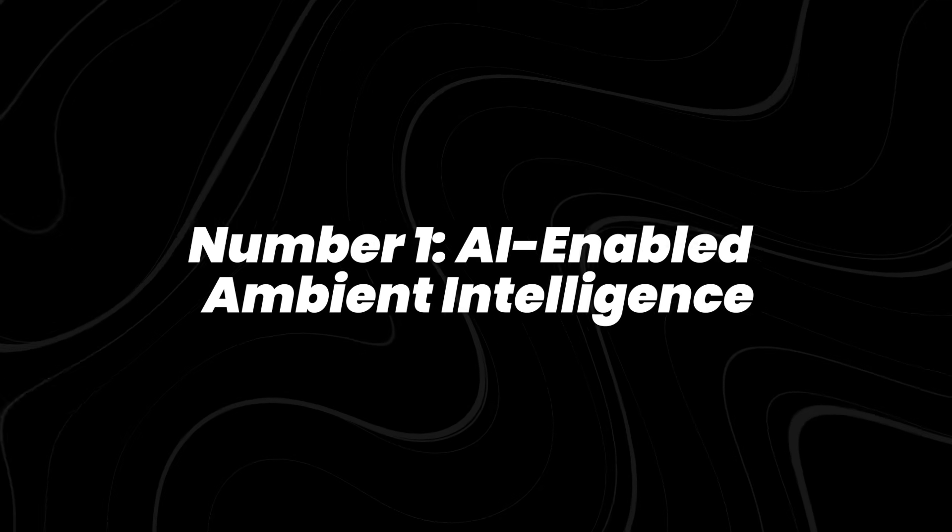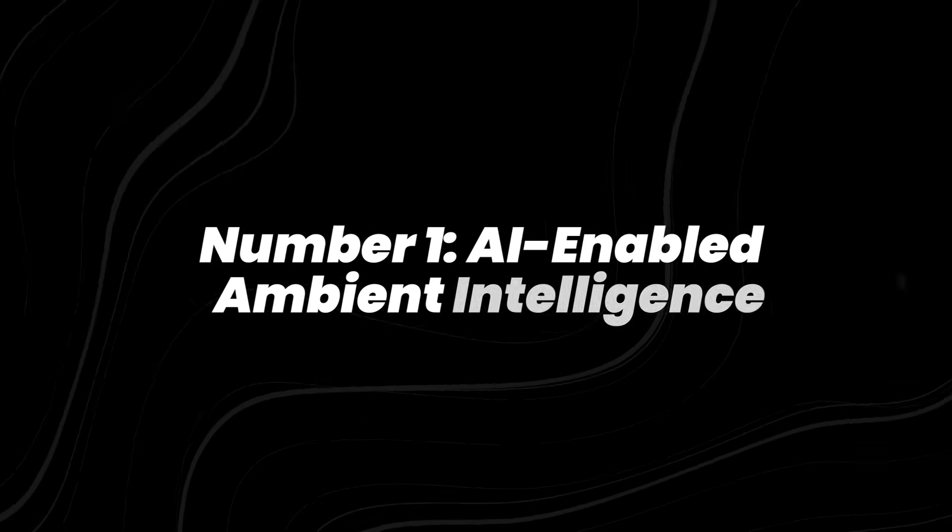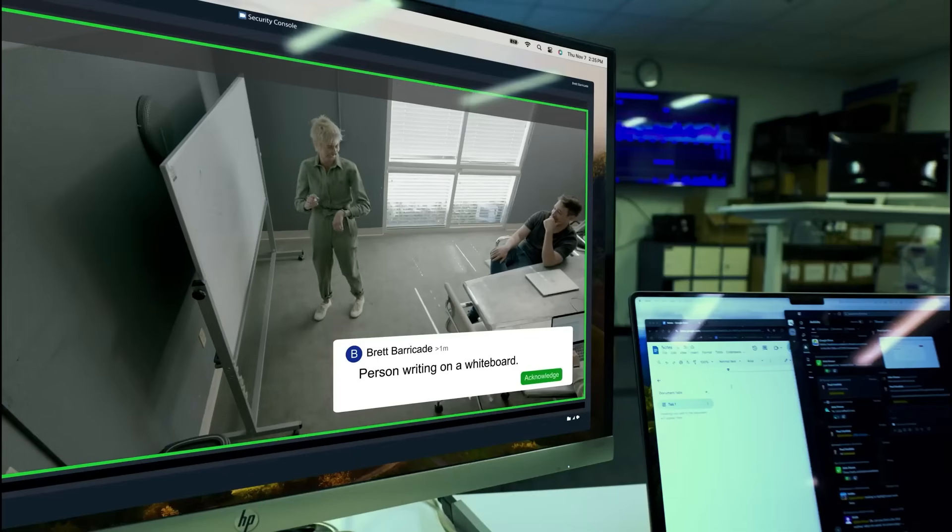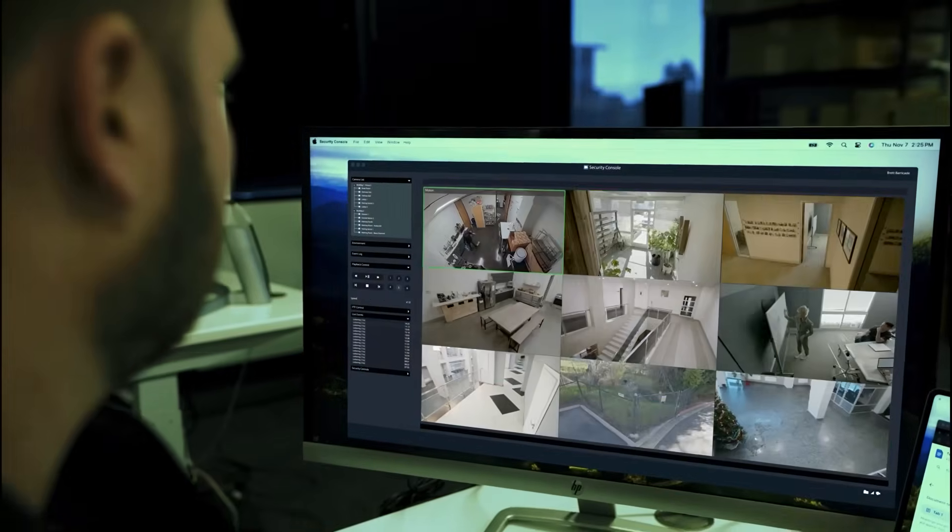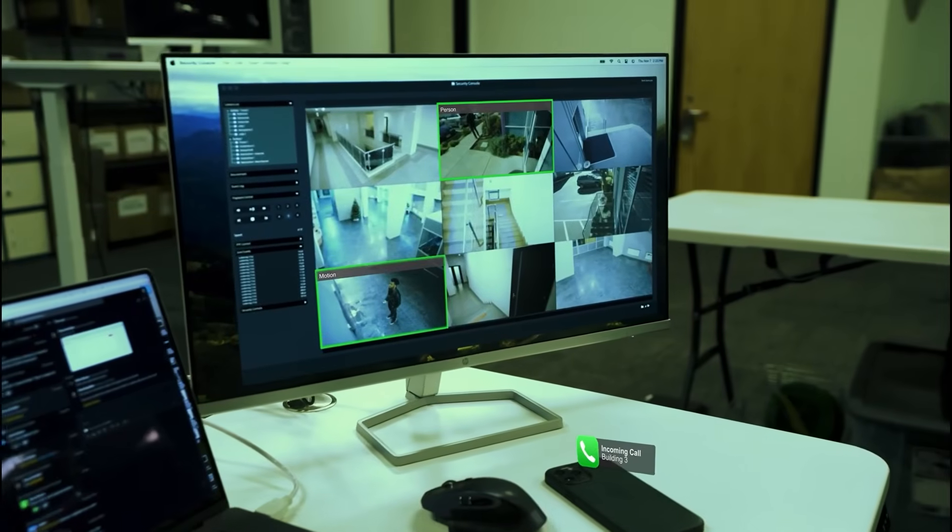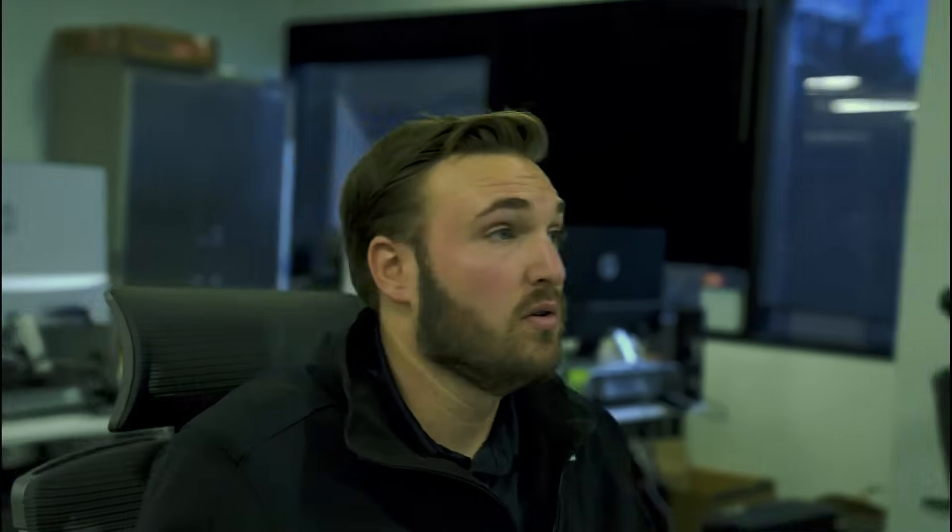Number 1, AI-enabled ambient intelligence. And finally, AI that doesn't just assist you, it surrounds you. Ambient intelligence refers to systems embedded into your environment that quietly sense, learn, and adapt. Smart lighting that adjusts to your mood, thermostats that learn your comfort patterns, and assistants that coordinate devices without you asking.